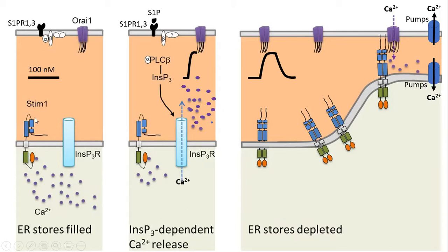There is a sensor protein STIM1. In the resting stage, when the ER stores are filled, the dots indicate calcium — there is a huge concentration outside the cell, a resting concentration of 100 nanomolar in the cytosol, and large calcium stores in the ER.